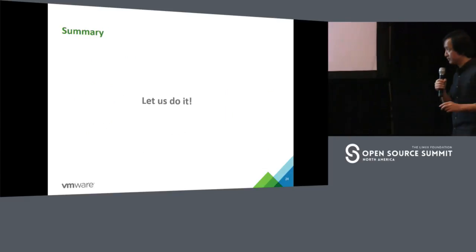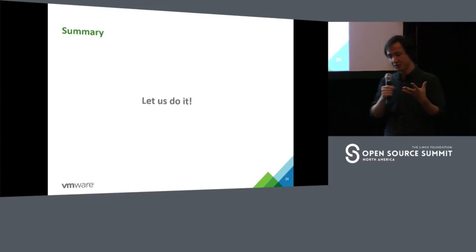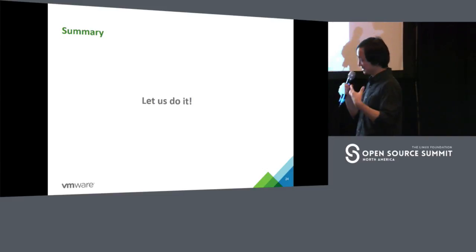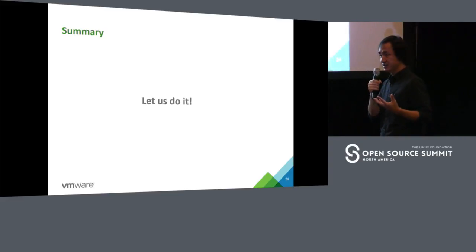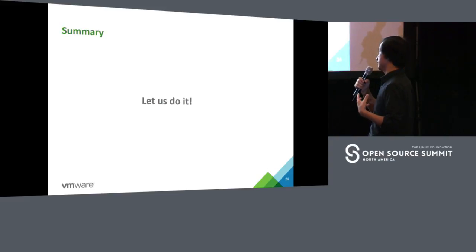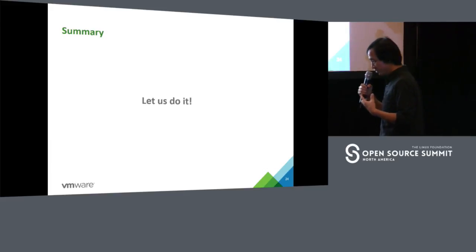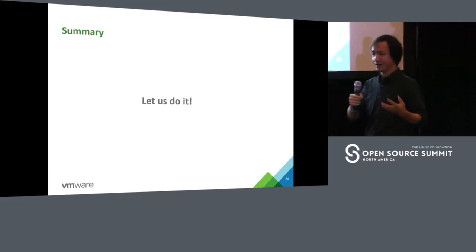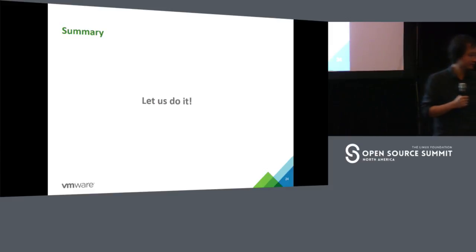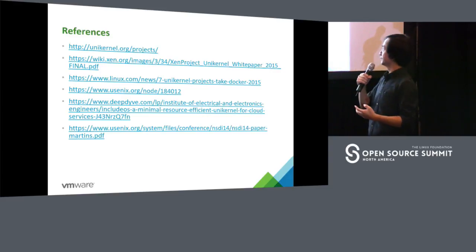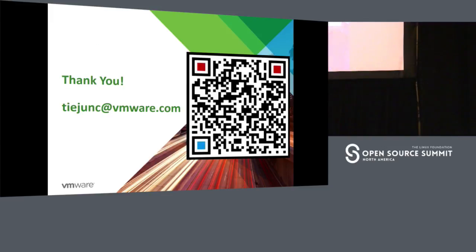In summary: unikernel is very small, fast, and has good performance. We have some existing unikernel solutions but they face challenges. Unikernel Linux can eliminate those challenges and embrace more potential and valuable use cases. All of this is my personal exploration, but I think it's worth continuing. Let's do it. Here are some references for this presentation, and that brings us to the end. If you have any questions, please go ahead.